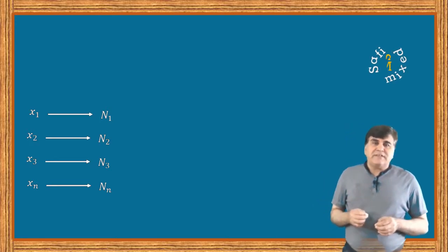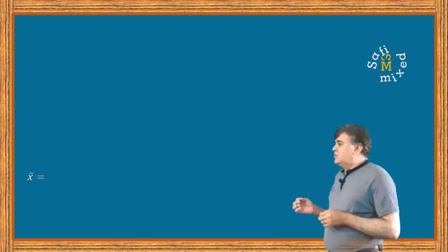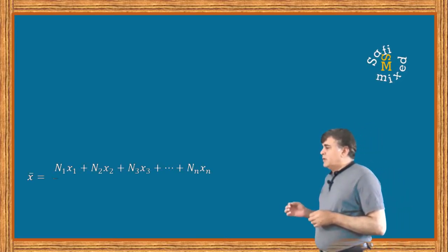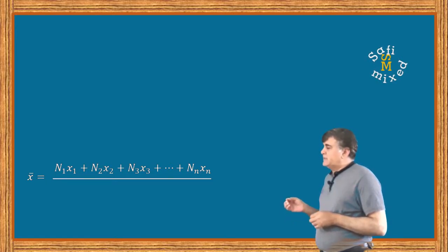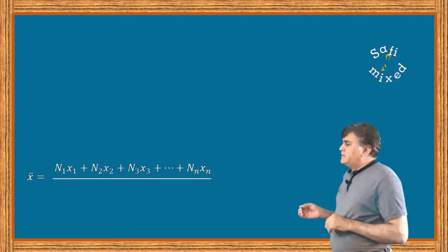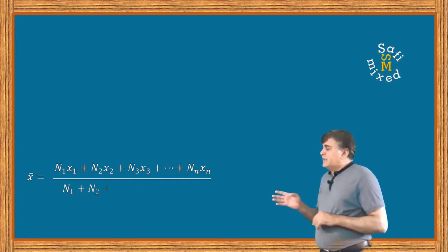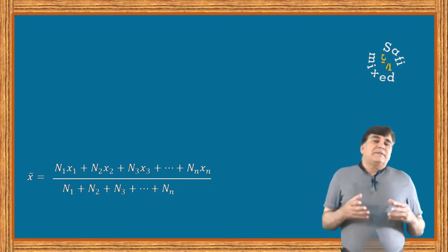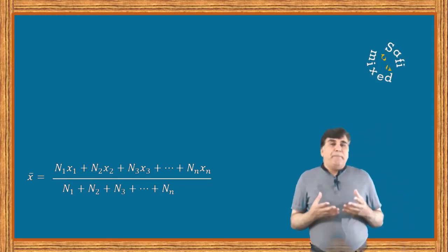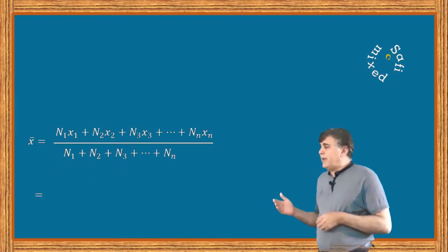The average value of position based on this data is then written as x-bar equals n1 times x1 plus n2 times x2 plus n3 times x3, up to n sub n times x sub n, divided by n1 plus n2 up to n sub n. This can be written in the form of a summation where i runs from 1 to n: n sub i times x sub i divided by the summation of n sub i.